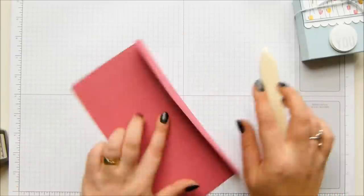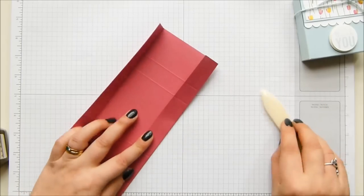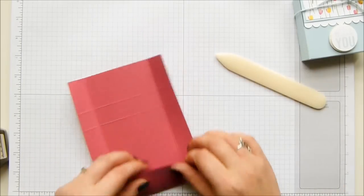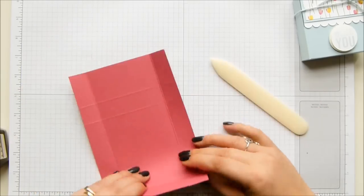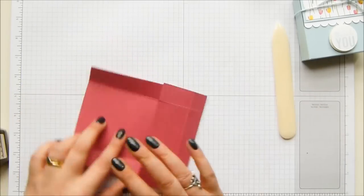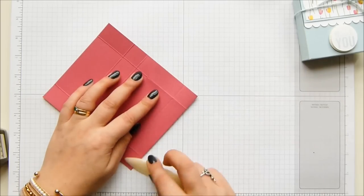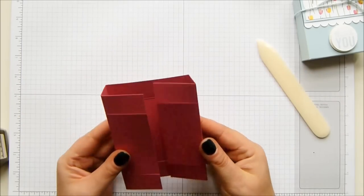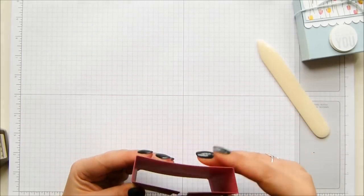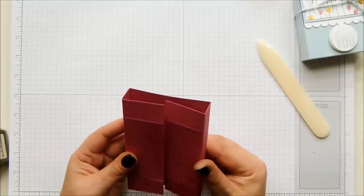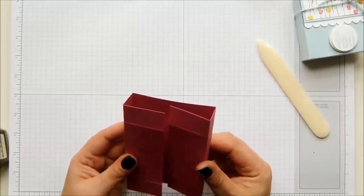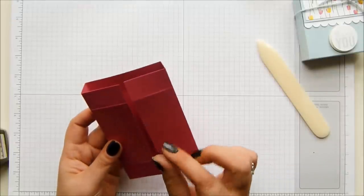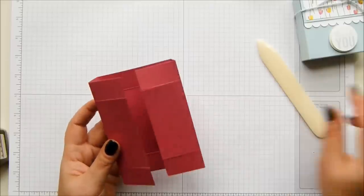Okay, so fold your score lines and burnish them well. When you are making the imperial version, it matches identically. There is no difference whatsoever. When you're making the metric version, there is a tiny fraction of a difference that one is slightly bigger than the other.